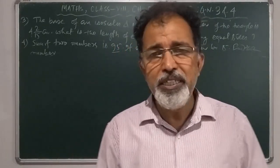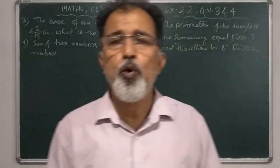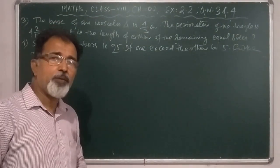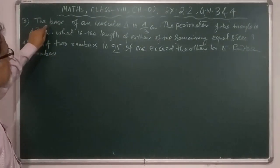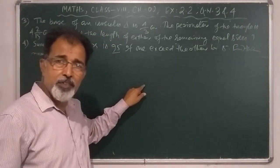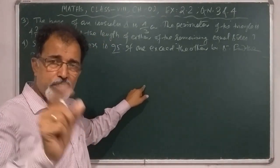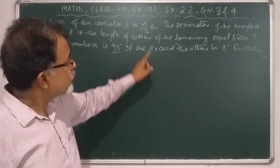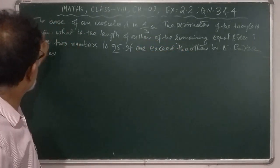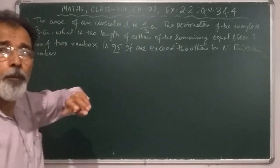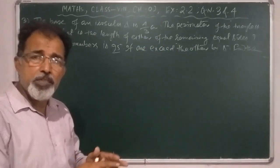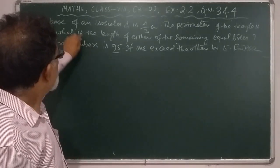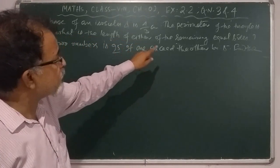Now, without wasting any time, I am going to show the solution of question number 3. The question reads: the base of an isosceles triangle is 4/3 cm. An isosceles triangle, as you already know, is a triangle whose two sides are equal. The perimeter of the triangle is 4 and 2/5 cm. Perimeter means the sum of the lengths of the three sides of a triangle. What is the length of either of the remaining equal sides?